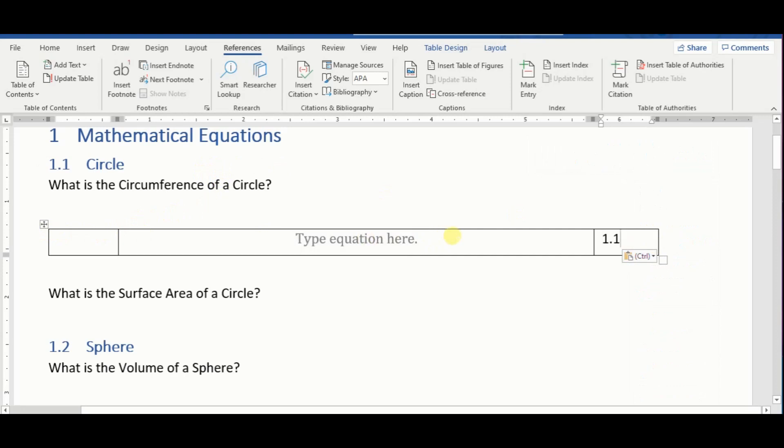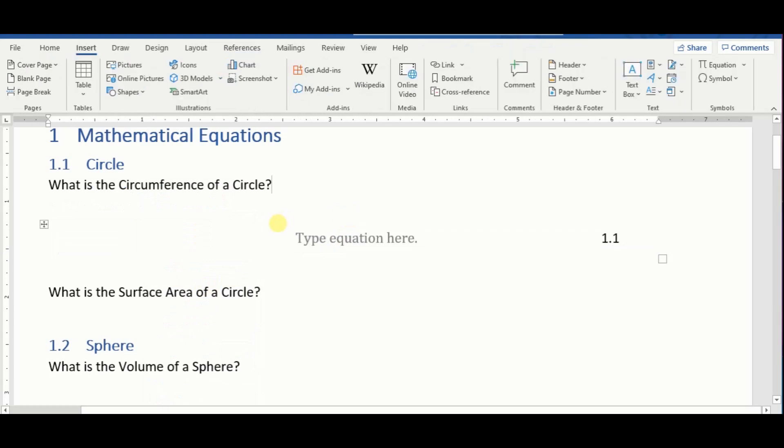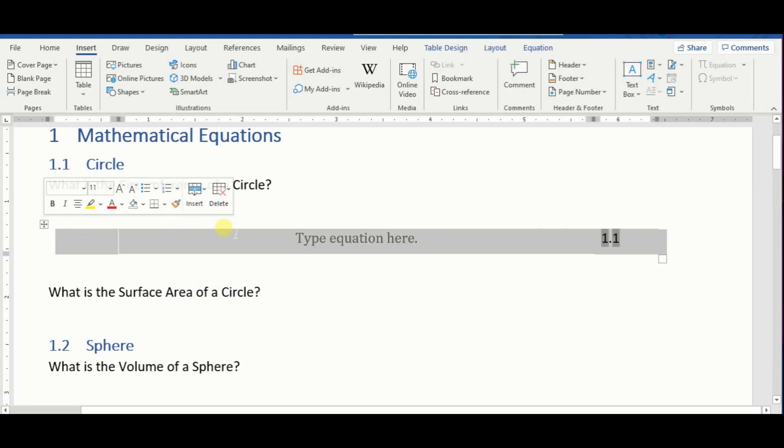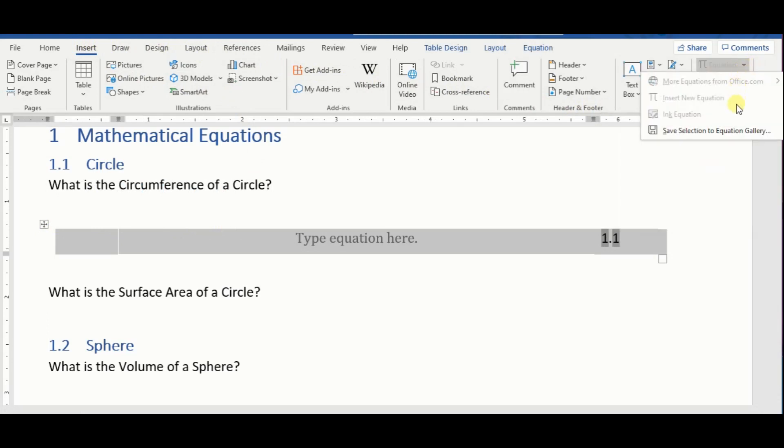Now we're gonna get rid of this table border by highlighting the table, and then go to borders, and then select no border. All right, so what we need to do now is to save this template. So we're gonna highlight it, and then go to insert, or select insert, and then on the equation, there is an arrow here. Select that, and then click on save selection to equation gallery.